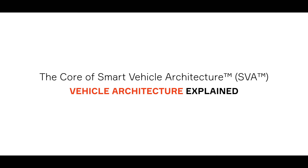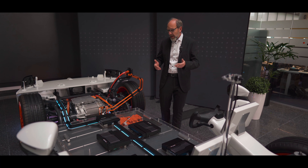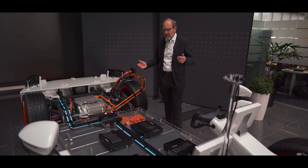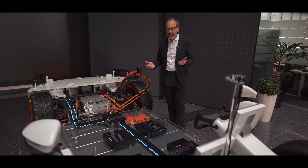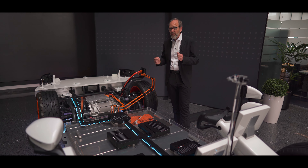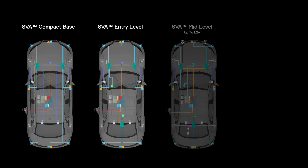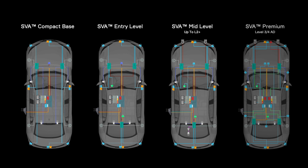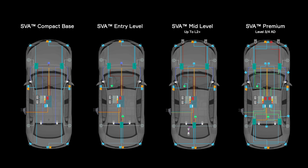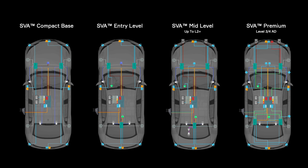In architecture studies together with our customer, it has shown that the best solution for a car like this one — which supports features up to maximum level two plus — is to have two zonal controllers in the front and one in the rear. In the front we have more IOs, inputs and outputs to control, so it makes sense to have two zonal controllers instead of one.